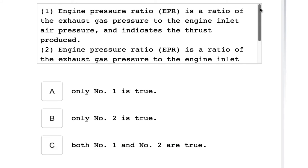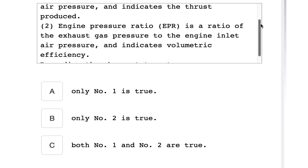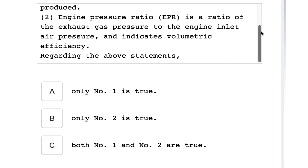Number one: Engine pressure ratio EPR is a ratio of exhaust gas temperature to the engine inlet pressure and indicates the thrust produced. Number two: Engine pressure ratio is a ratio of the exhaust gas pressure to the engine inlet air pressure and indicates volumetric efficiency. Regarding the above statement, only one is true.